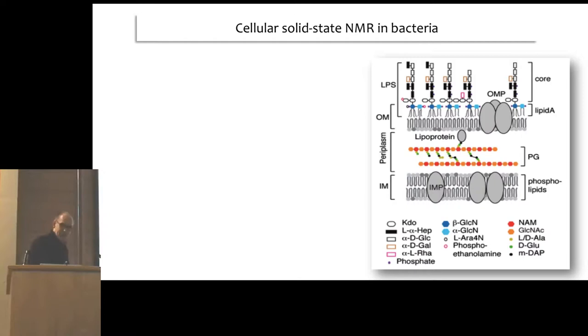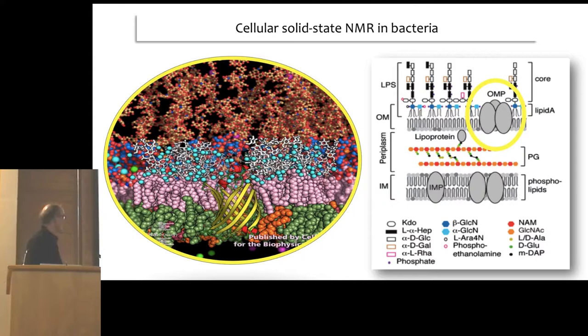Coming back to what we just heard in the last talk - from gram-negative bacteria, you have quite a complex situation if you want to study a protein in the outer membrane or in the periplasm below. This was nicely put into a cartoon a couple of years ago in the Biophysical Journal, where you look at an outer membrane protein like OmpA, which of course has been one of the first proteins studied by NMR. The situation is actually quite complicated if you think about the normal environment like LPS and so forth. One of the advantages that NMR can offer is that we can work with these kinds of preparations.